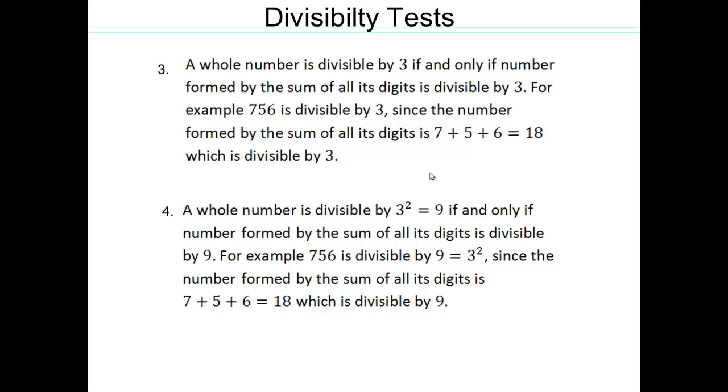Let's look at 3. The test for 3 is 3 divides the sum of all the digits, then the whole number is divisible by 3. So 756, the 7 plus 5 plus 6 add up to 18, 3 divides 18, so 3 divides 756. The test for 9 is the same. Add up all the digits. If the sum is divisible by 9, the whole number is divisible by 9.